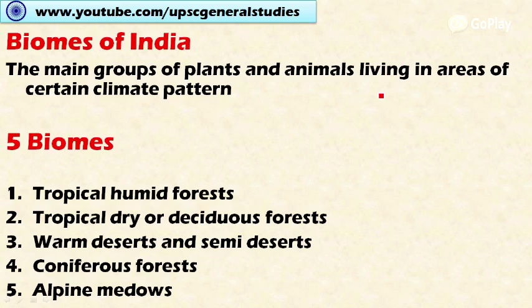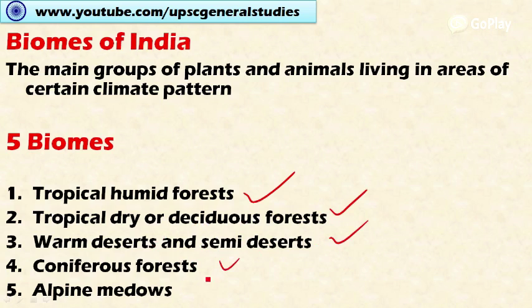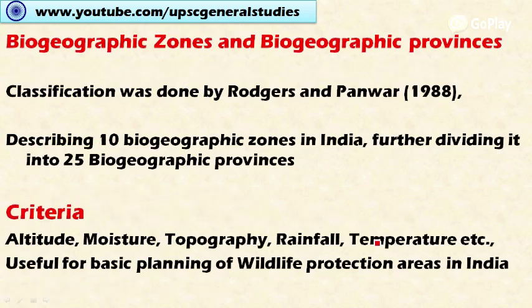India has five important biomes. Biomes are biogeographical regions with similar plants and animal species, similar vegetation, and similar temperature and precipitation. India is broadly divided into five biomes: tropical humid forests, tropical dry or deciduous forests, warm deserts and semi-deserts, coniferous forests, and alpine meadows.